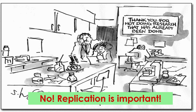We always want to do research that's already been done — this is called replication — because we want to make sure the results are accurate and weren't just luck. If your p-value is 0.05, that means about 5% of the time you're going to accept results that are false. So replication is essential.